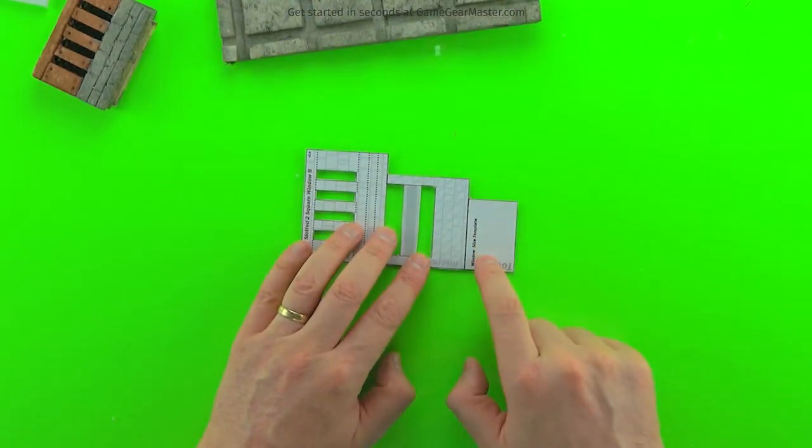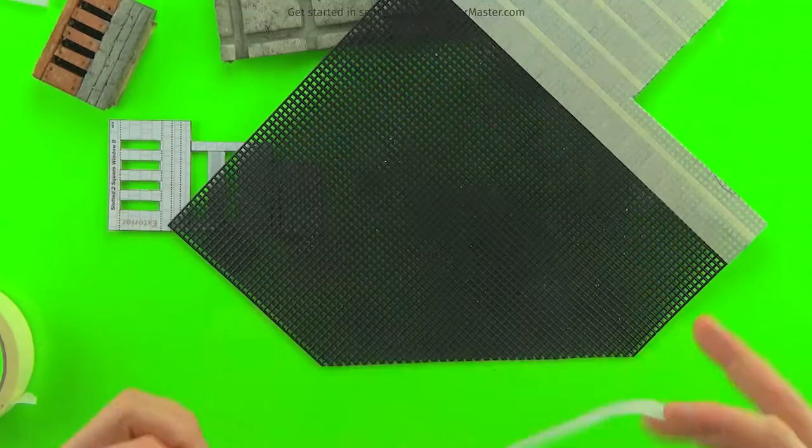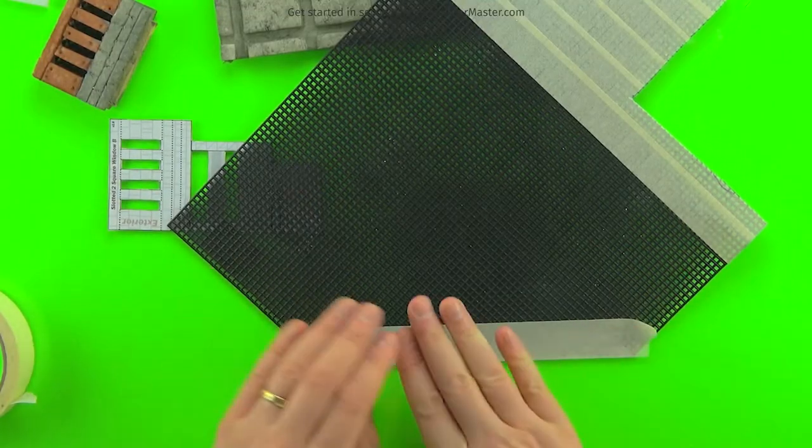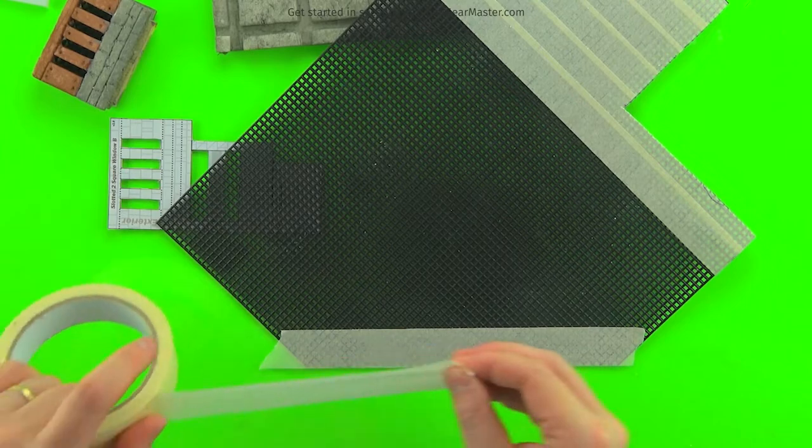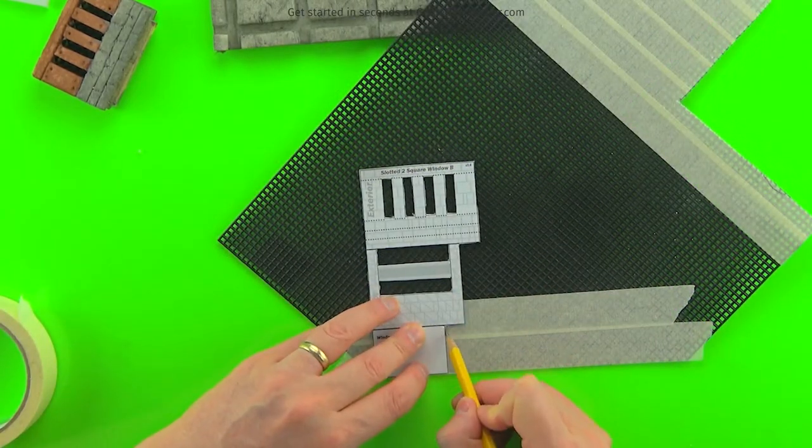And now we're going to cut the interior piece for the window and that's going to be out of our needlepoint material. And I put masking tape on there so you can actually trace out the template on top of the needlepoint. So then we're just going to trace out that window template and cut it out of the needlepoint.